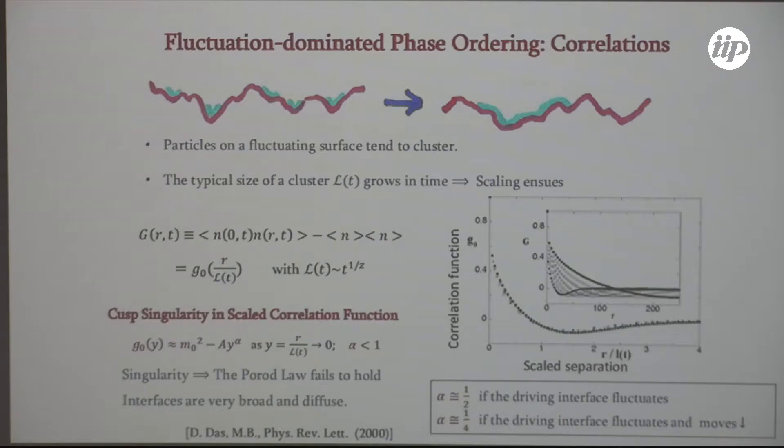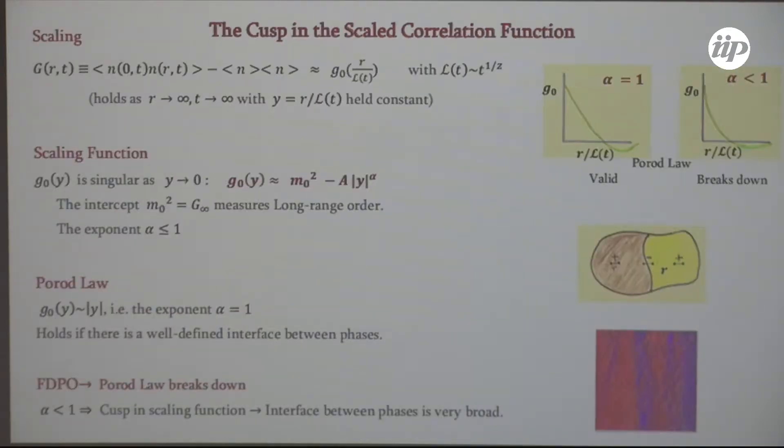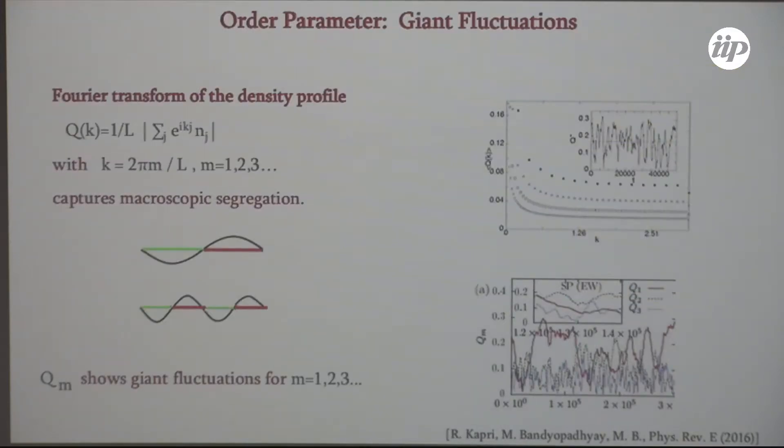There's a physical significance to this singularity. The Poirot law, which I will not enter into, fails. It breaks down in this system. The cusp exponent is what I'm calling alpha. Not the alpha of the meeting. It's the cusp exponent here. And its value depends on the dynamics of the driving. The scaling, the correlation function is a scaling function. The function, as a function of its argument, is singular as y goes to zero. Here's the nature of the singularity. It's a cusp. And this exponent alpha is less than one, which means cusp. The Poirot law, which I alluded to, is the statement that alpha equals one. And it holds in normal coarsening systems. It fails here. It breaks down. It's a very simple physical reason, but I won't enter into it right now. Essentially, it has to do with the fact that the interface is rather broad. It's not a sharp interface between two phases.